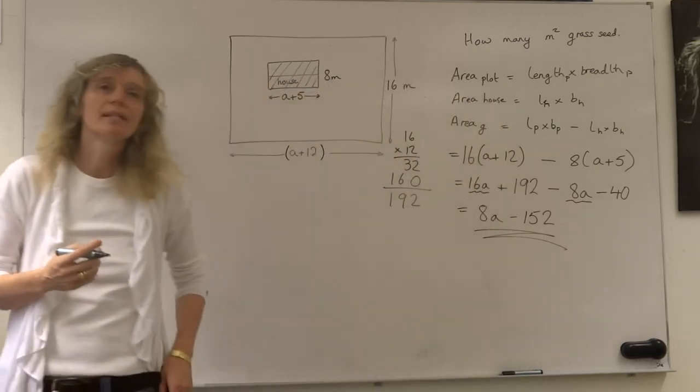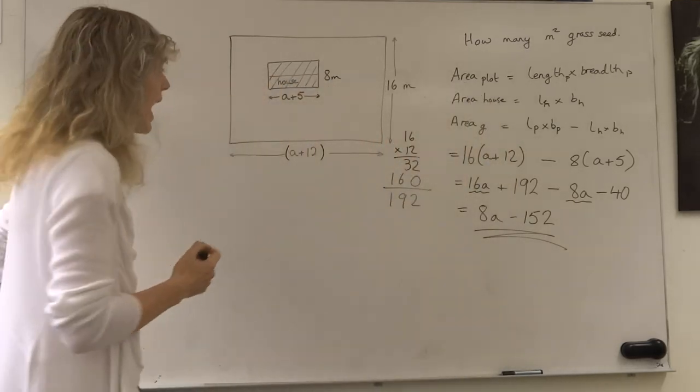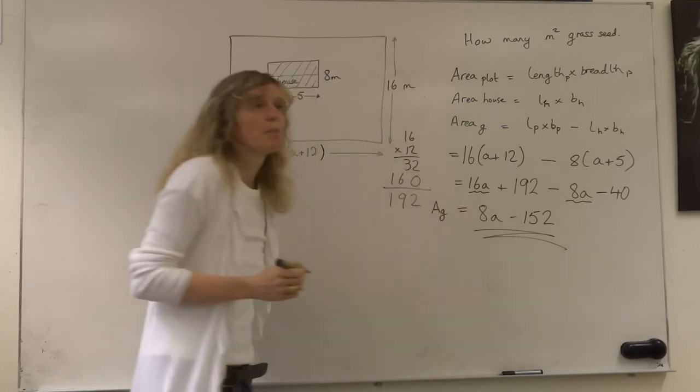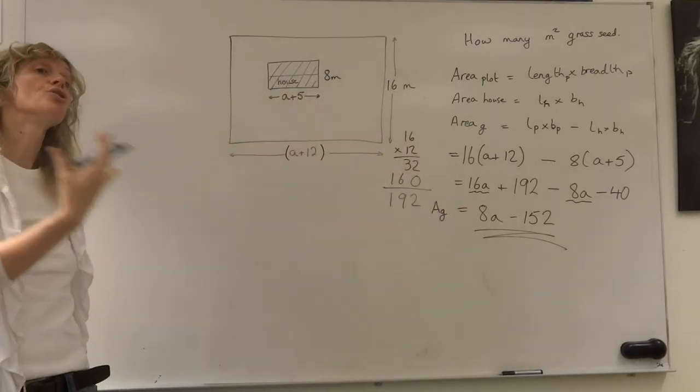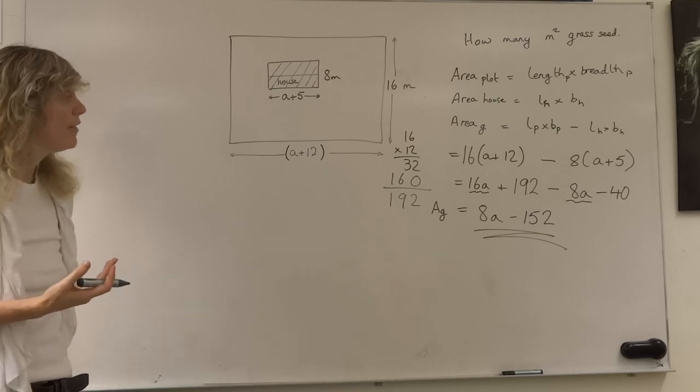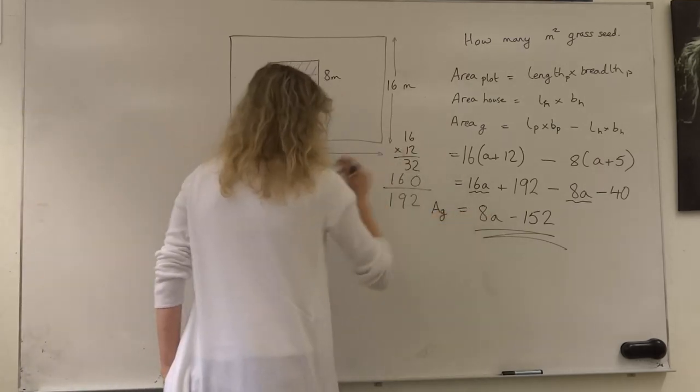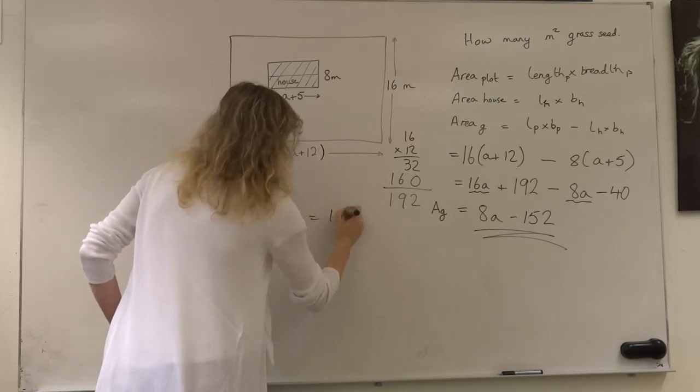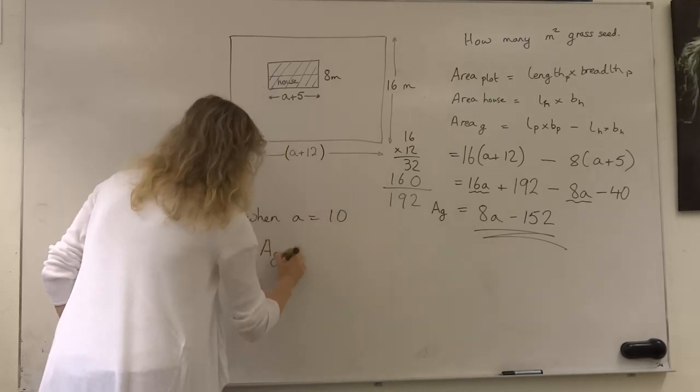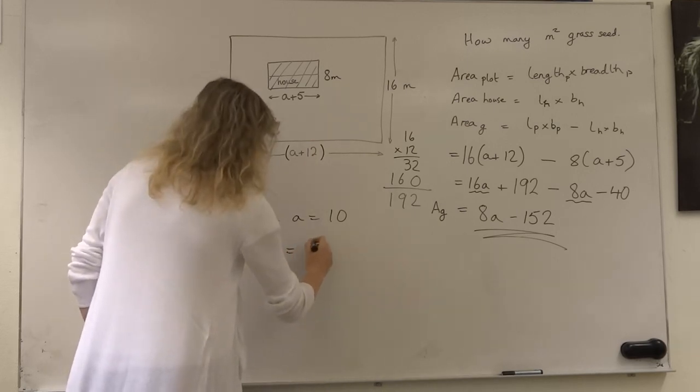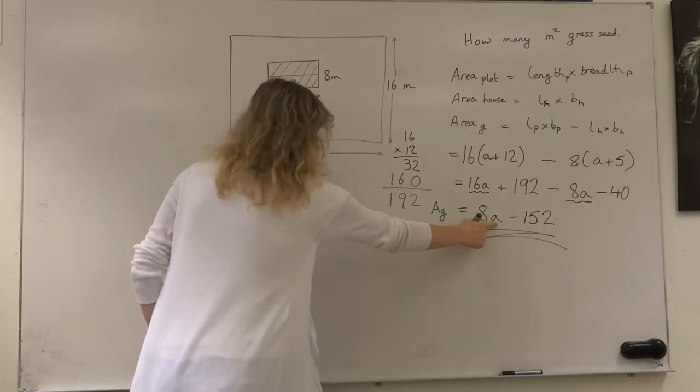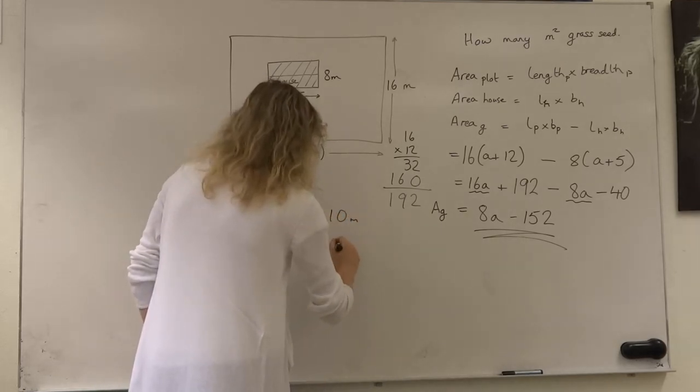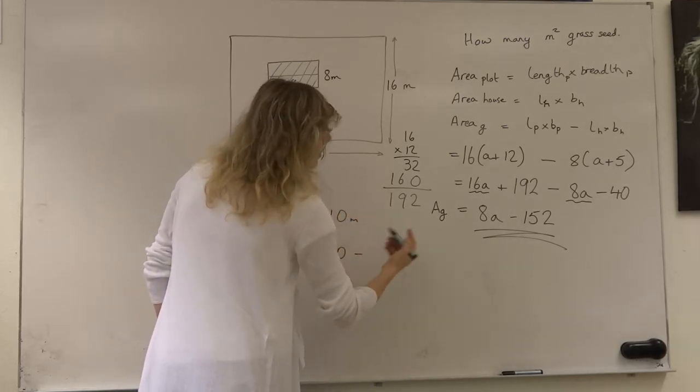So this is our simplest expression of the area of grass for this plot. Now they've told us to solve it if a equals 10. So when a equals 10, the area of the grass seed that we would need to buy would be 8 times 10 plus 152.